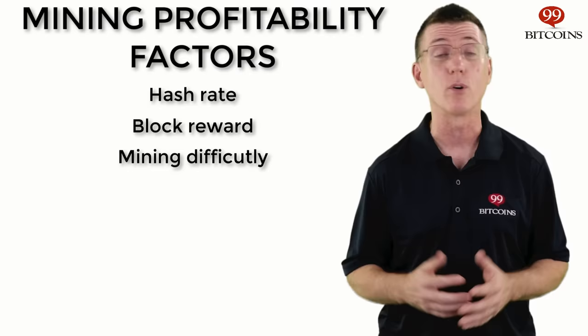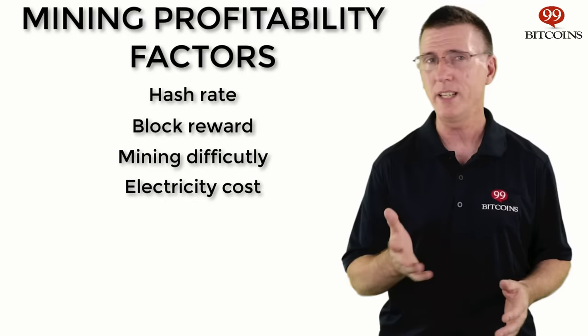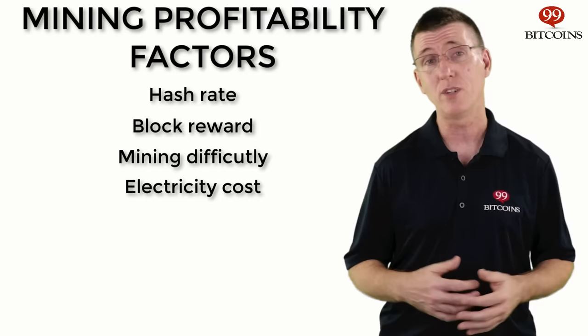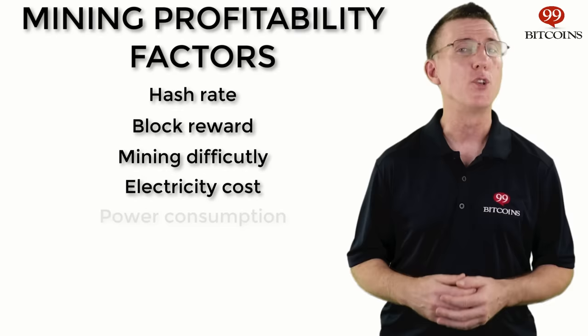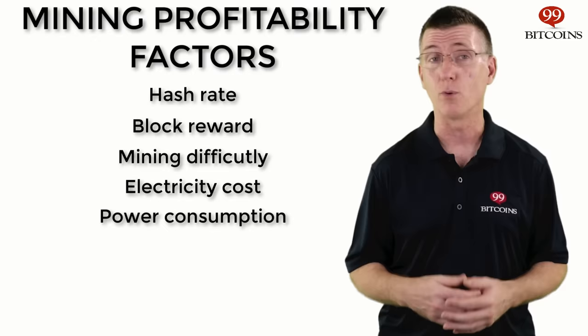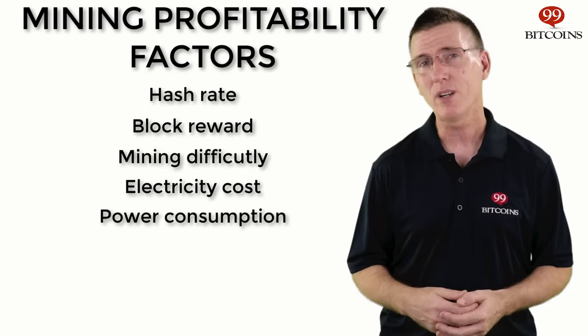Number three: the mining difficulty — a number that represents how hard it is to mine bitcoins at a certain moment, according to the amount of mining power currently active in the system. Number four: your electricity cost. How many dollars are you paying per kilowatt? You'll need to find out your electricity rate to calculate profitability, usually found on your monthly electricity bill. This matters because miners consume electricity whether for powering up the miner or cooling it down, as these machines can get really hot. Number five: your miner's power consumption. Each miner consumes a different amount of energy, and this can be found easily with a quick internet search.